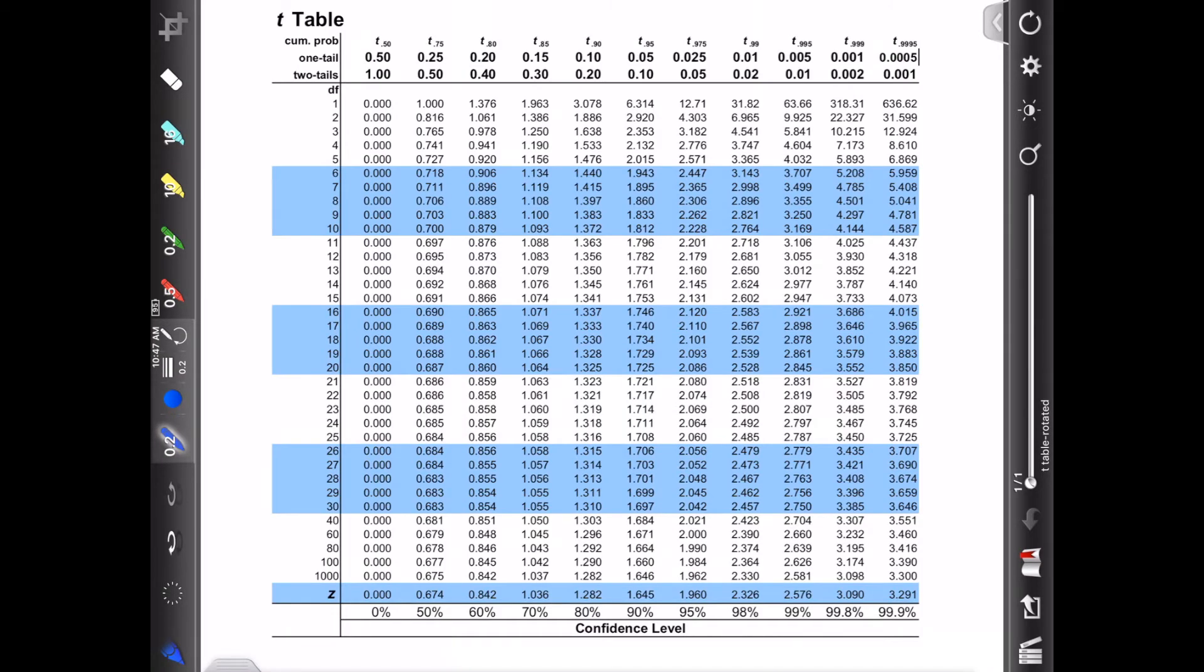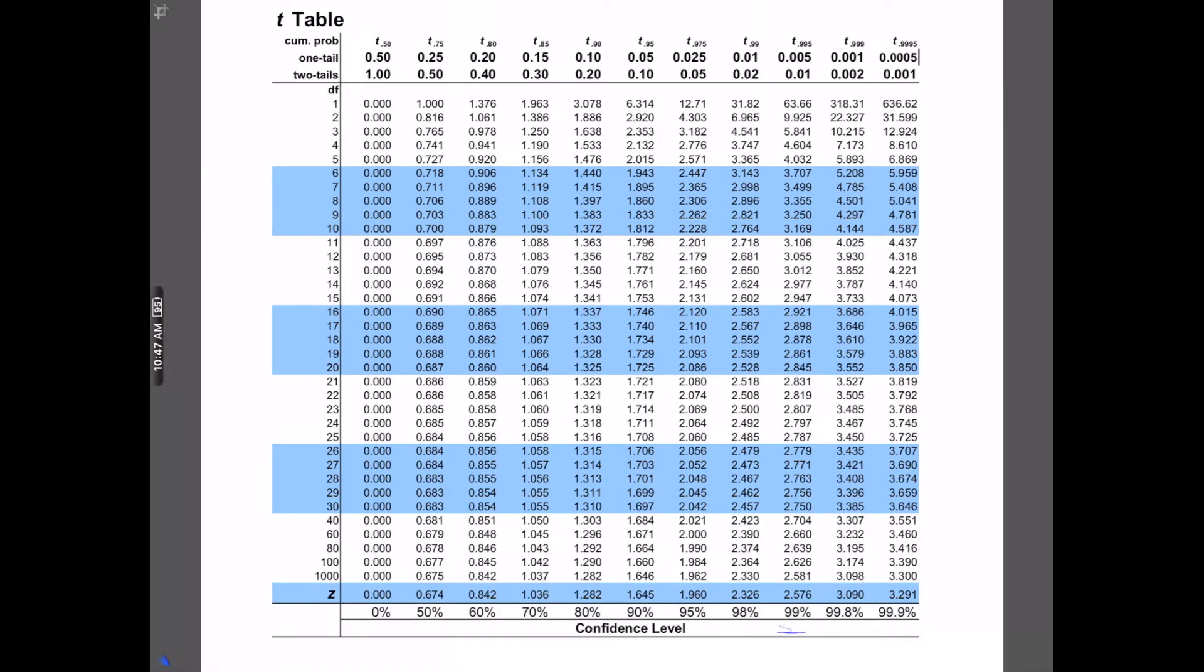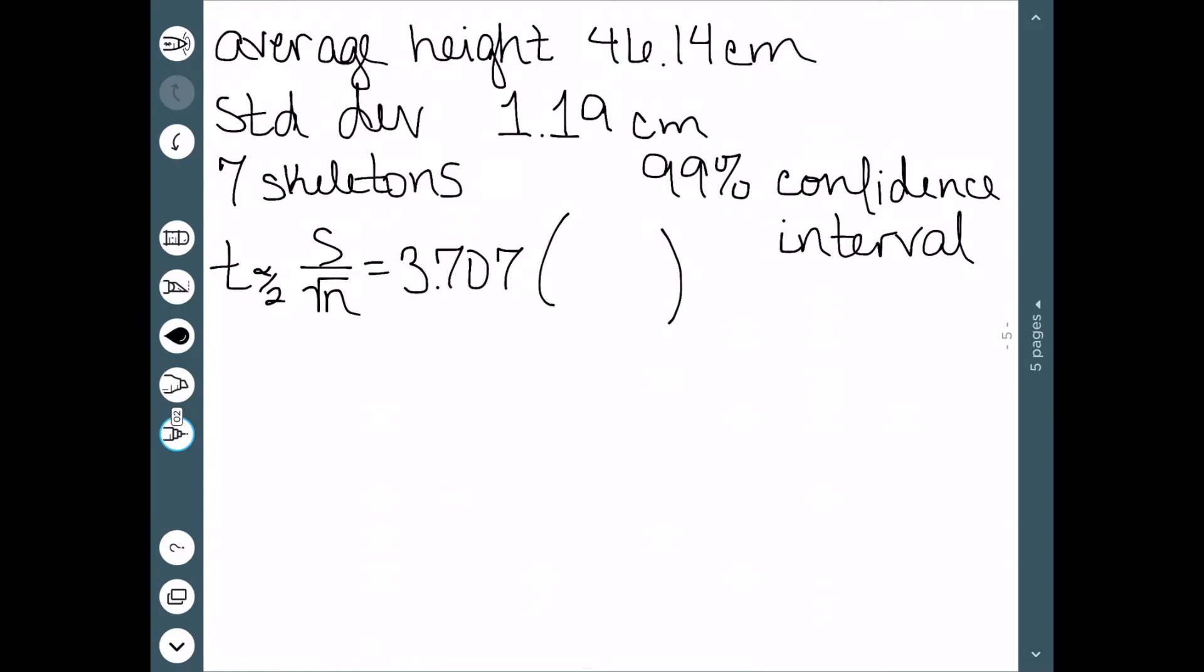So here's our t-table. We know we need a 99% confidence interval. And we know our degrees of freedom is 6. So if I go up to the 6, 3.707. There's our value of t. s is our standard deviation, 1.19. And n is our sample size, which is 7.